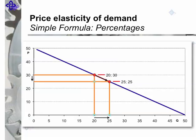The price elasticity is calculated as follows. The quantity demanded increases by 5, that is 25% of 20. The price fell by 5, that is 16.7% of 30 pounds. The price elasticity is minus 1.5.